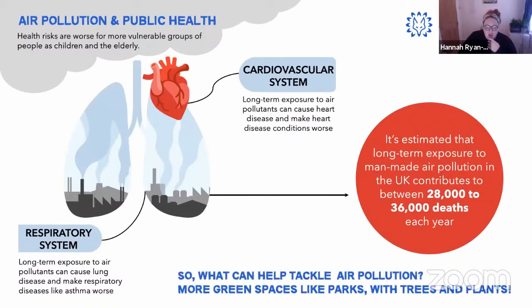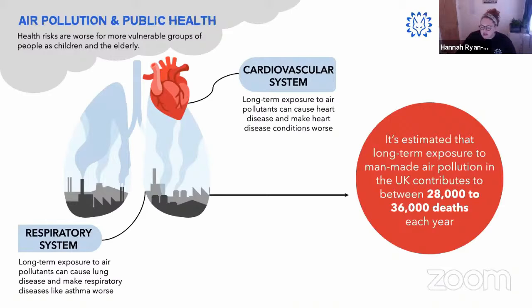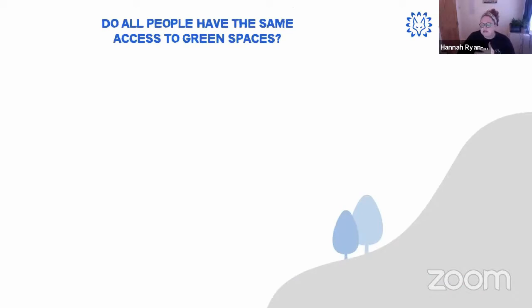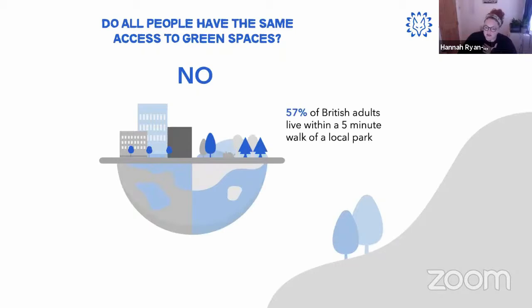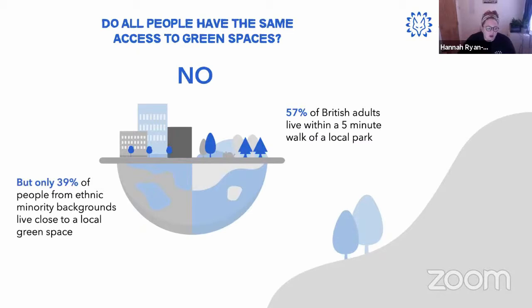What can we do to tackle air pollution? One solution is having more green spaces — parks with trees and plants. Trees take in carbon dioxide and release oxygen, literally cleaning our air. But do all people have the same access to these green spaces? No. A recent survey found that 57% of British adults live within a five-minute walk of a local park — but only 39% of people from ethnic minority backgrounds live close to a local green space.